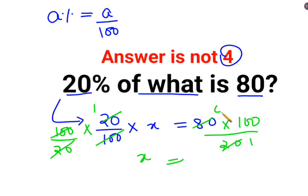On the other side you have 80 × 100 ÷ 20, so the value for x is 400. Therefore, 20% of 400 is 80. I hope this is very clear to everyone. That's it for today, I'll see you in the next video.